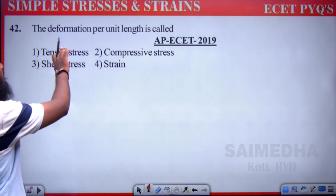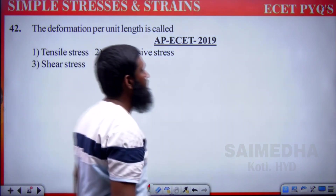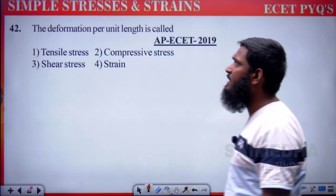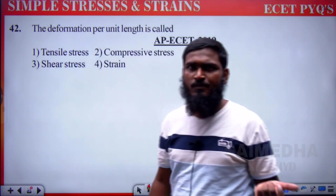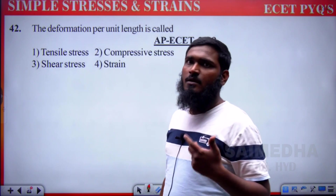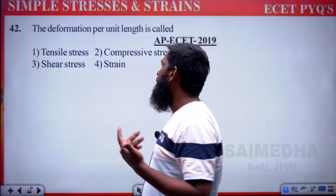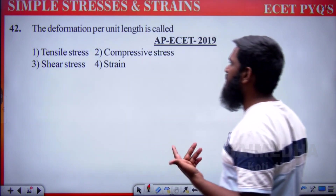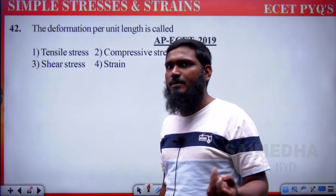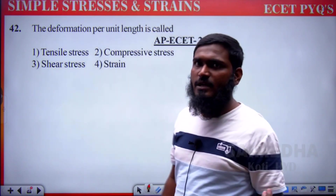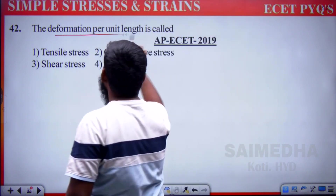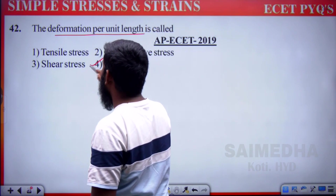Next: the deformation per unit length is called — deformation means change. Change in dimension by original dimension is directly the definition of strain. So the answer is strain.